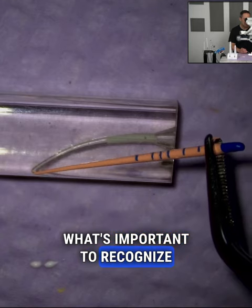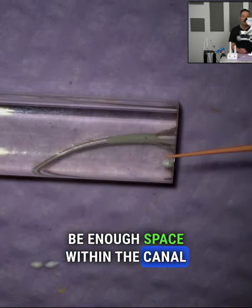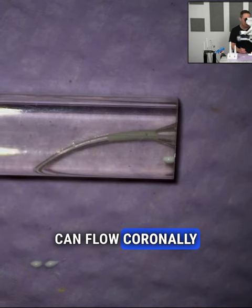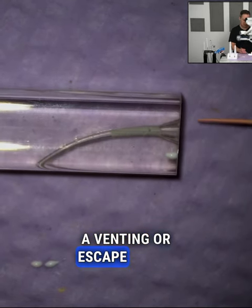What's important to recognize is you also want there to be enough space within the canal where some of the sealer can flow coronally as well. It gives it almost like a venting or escape valve.